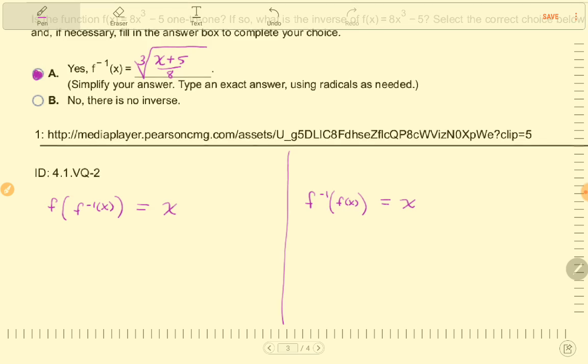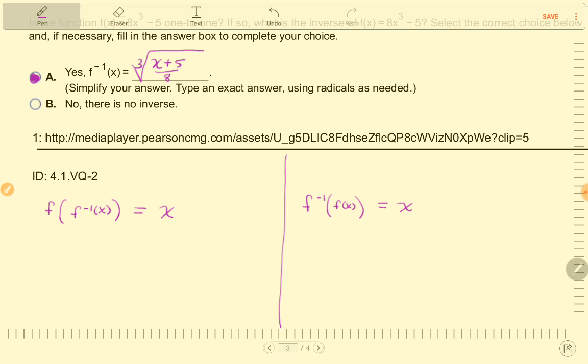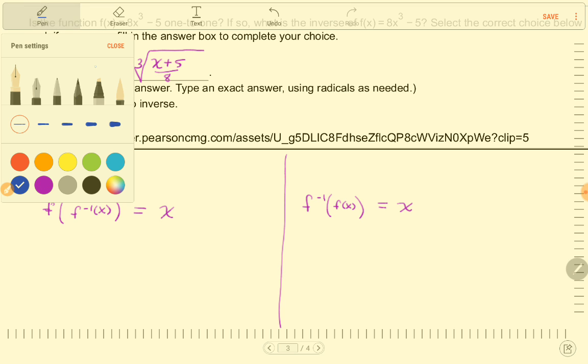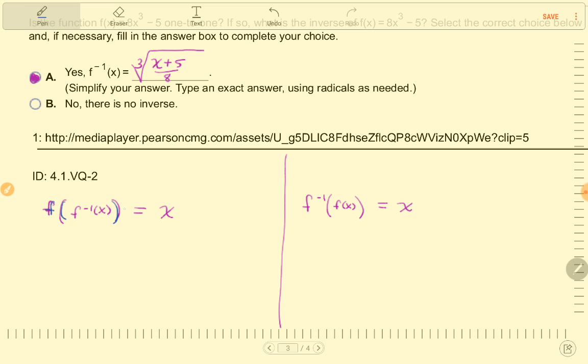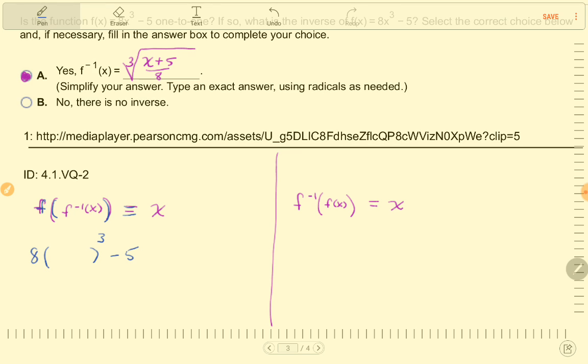So, I'll start by doing the outer function. f of x is 8x cubed minus 5, so over here, I'll do blue for the original. f of f inverse of x. So, f was 8x cubed minus 5, and inside is the cube root of x plus 5 divided by 8. And, if I simplify this...